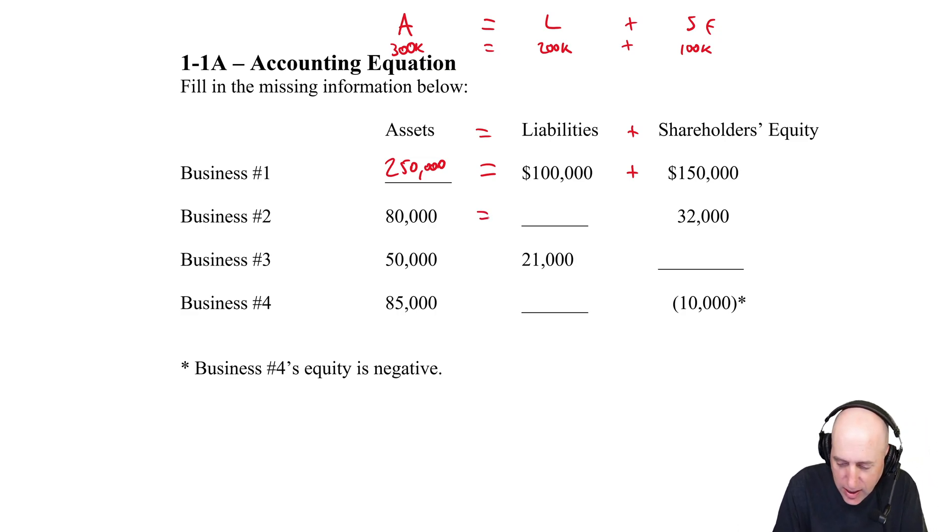Let's do business two. The assets are 80, the liabilities we don't know, but we know the equity is 32. So something plus 32 equals 80. The math would be 80 minus 32 - the answer here is $48,000. I always double-check by going: what's 48 plus 32? It is 80. The math worked.